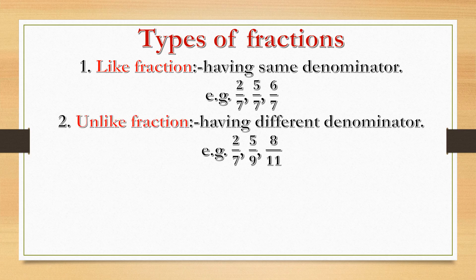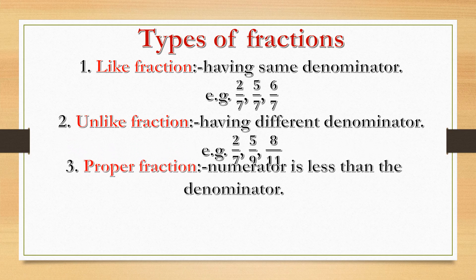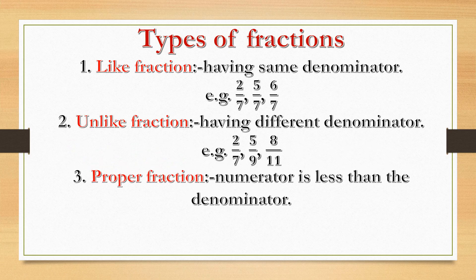Unlike fractions have different denominators, like seven, nine, and eleven — all different. Third type: proper fraction — where the numerator is less than the denominator. For example, two by seven, five by eight — the upper part (numerator) is less than the denominator.